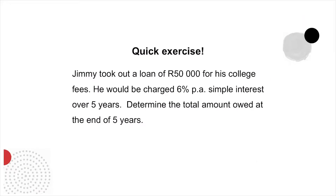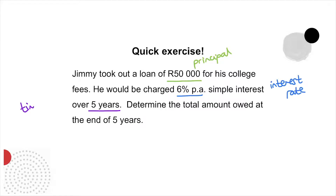Quick exercise: Jimmy took out a loan of 50,000 Rand for his college fees. That 50,000 Rand represents the principal amount. He would be charged 6% per annum over five years — the 6% per annum simple interest is our interest rate, and the 5 years is our time period. We need to determine the total amount owed at the end of five years. Remember, the total amount equals the principal plus the interest.